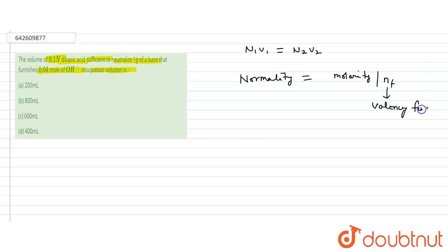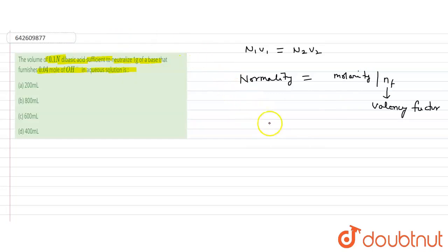For OH⁻ ions, the valency factor (n-factor) equals one, because there is only one ion. So the n-factor for OH⁻ is 1.